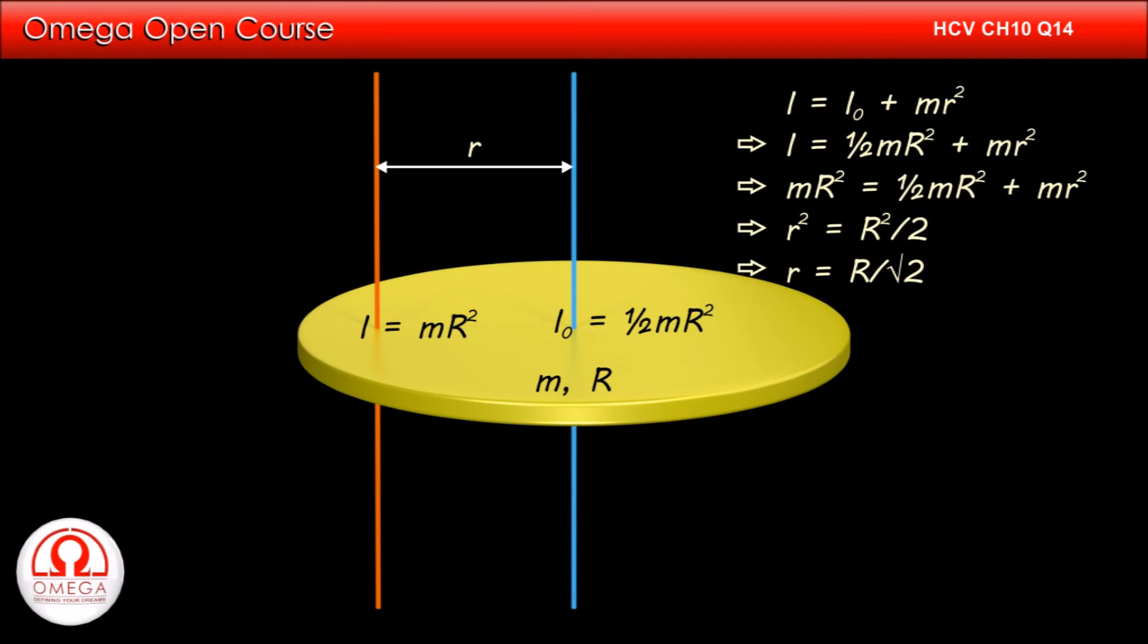Thus, the distance of the line from the center of the disc is equal to the radius of the disc divided by root 2. This is our answer.